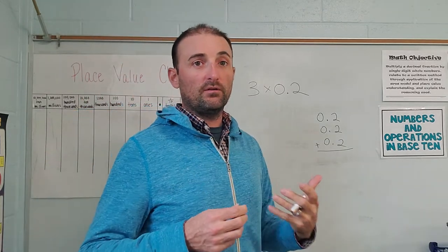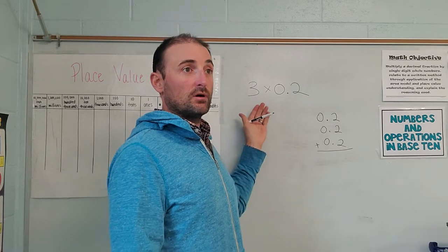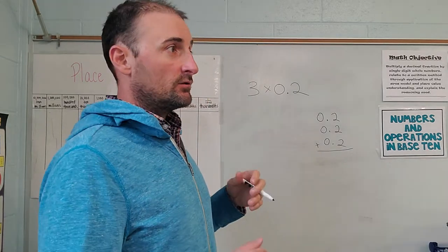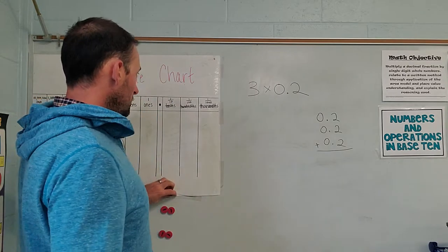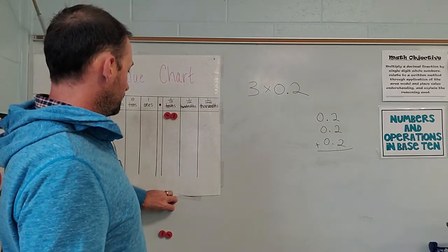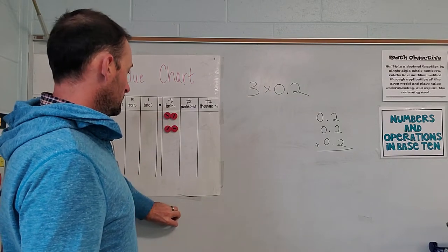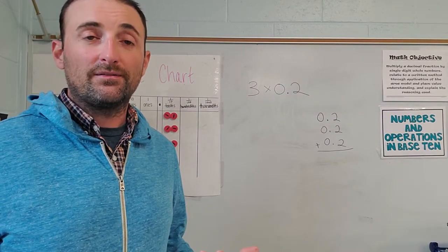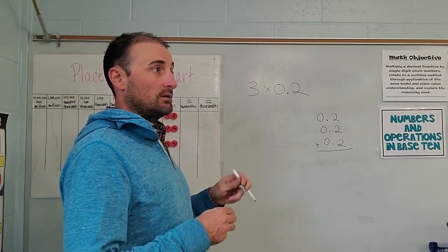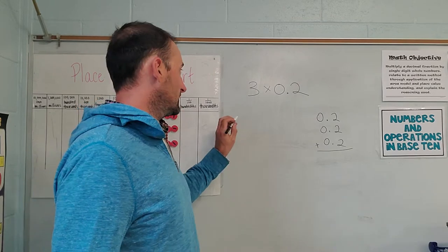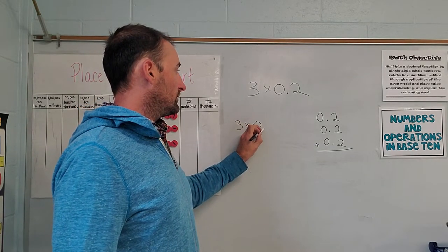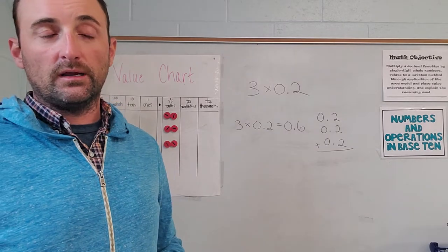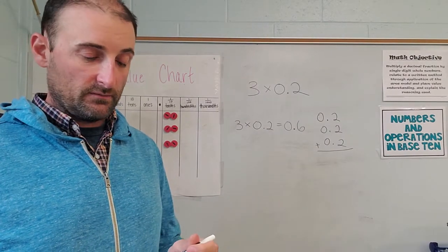You can't always assume that 'of' means multiply, but a lot of the times it does. When I translate it from numerical form to word form, I say three groups of 2 tenths. So let's model it on our place value chart: 2 tenths, 2 tenths, 2 tenths. We have three groups of 2 tenths, and the total is 6 tenths. So our standard algorithm: three groups of 2 tenths is 6 tenths. That's a fairly simple one, and we're going to get into a little bit more complicated stuff, but not too much more.